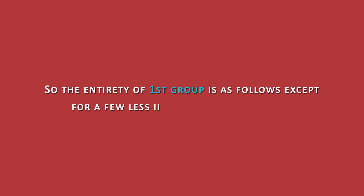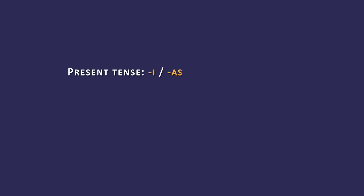The entirety of the first conjugation group is as follows, except for a few less important conjugations that I omitted. In the present tense, you have the endings: I, as, a, am, at, and an.